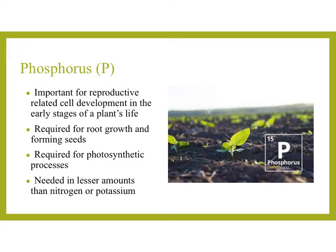Next up: phosphorus. This is important for reproductive-related cell development in the early stages of a plant's life. It's required for root growth and for forming seeds, and it's also required for photosynthetic processes. It's needed in lesser amounts than nitrogen or potassium, but it's still essential.